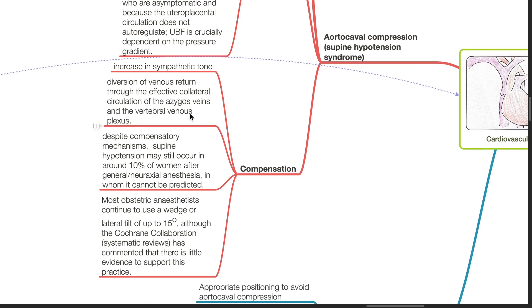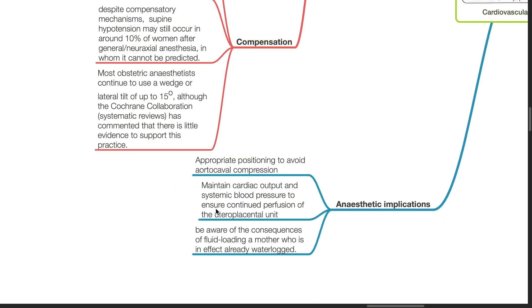Compensation by increase in sympathetic tone, diversion of venous return through the effective collateral circulation of azygous and the vertebral venous plexus. Despite these mechanisms, supine hypotension may still occur in around 20% of women under anesthesia. Most anesthetists continue to use a wedge or lateral tilt of up to 15 degrees, although there is no evidence to suggest it is beneficial.